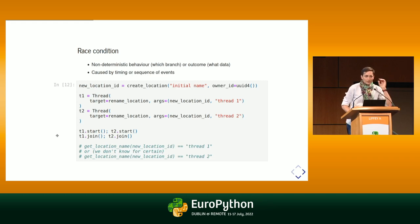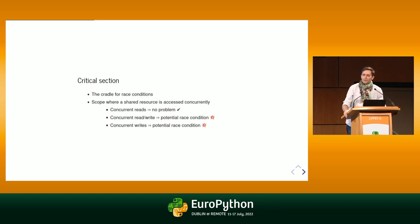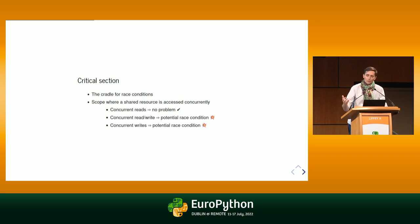A race condition cannot just happen randomly — it has to be somewhere. We call that somewhere a critical section: the part of the program where we access a shared resource in a concurrent manner. If it's only concurrent reads, we don't have a problem, because whether you read at the same time or within seconds of each other doesn't matter as long as you don't have writes or side effects. It becomes interesting when we have at least one mutation that happens concurrently to other calls — that's where we can have a race condition. The exercise here is how to trigger a race condition so that we can then fix it.